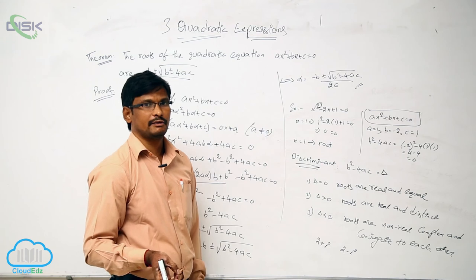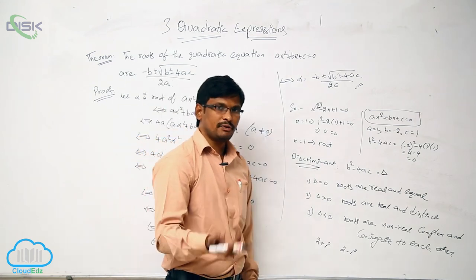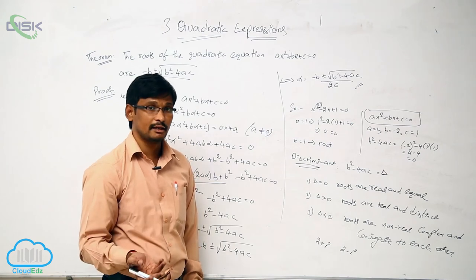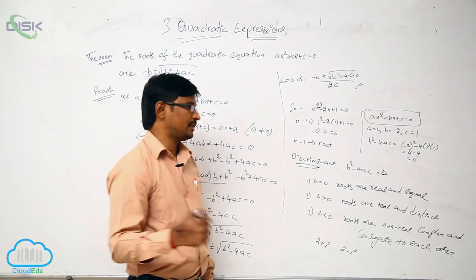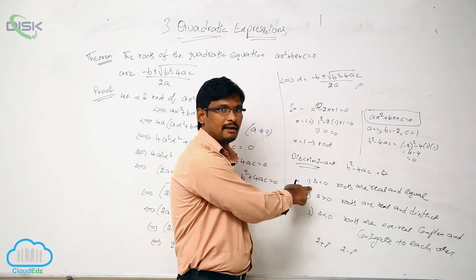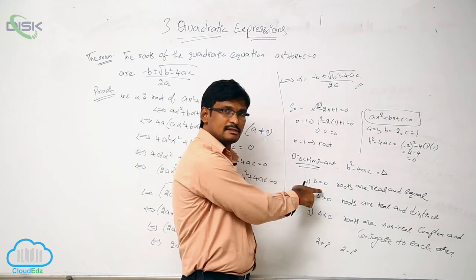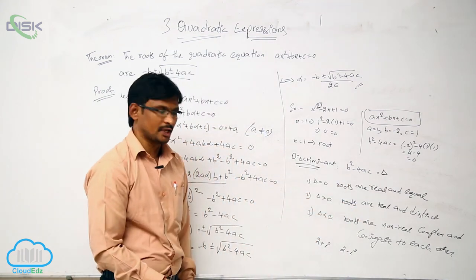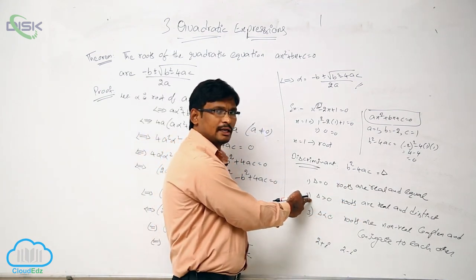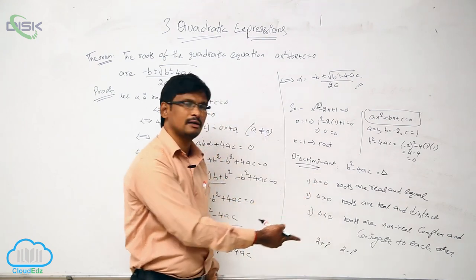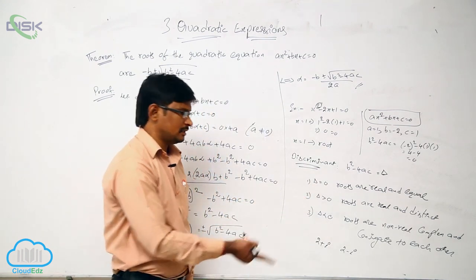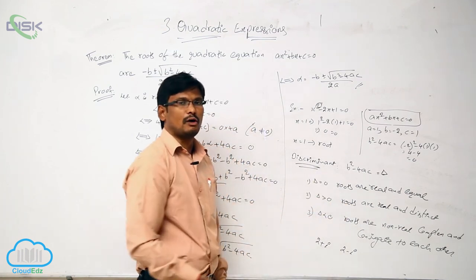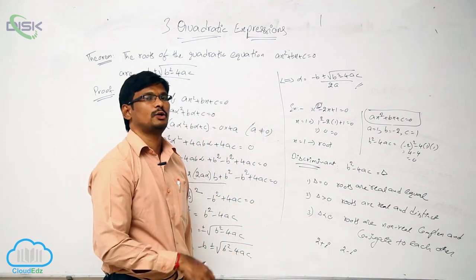Sometimes problems will give a quadratic equation and ask you — without solving — to verify whether the roots are real and equal, distinct, or complex conjugates. For that, find the discriminant. If the value is 0, the roots are real and equal. If delta is greater than 0, the roots are real and distinct. If less than 0, the roots are non-real complex numbers, conjugate to each other.